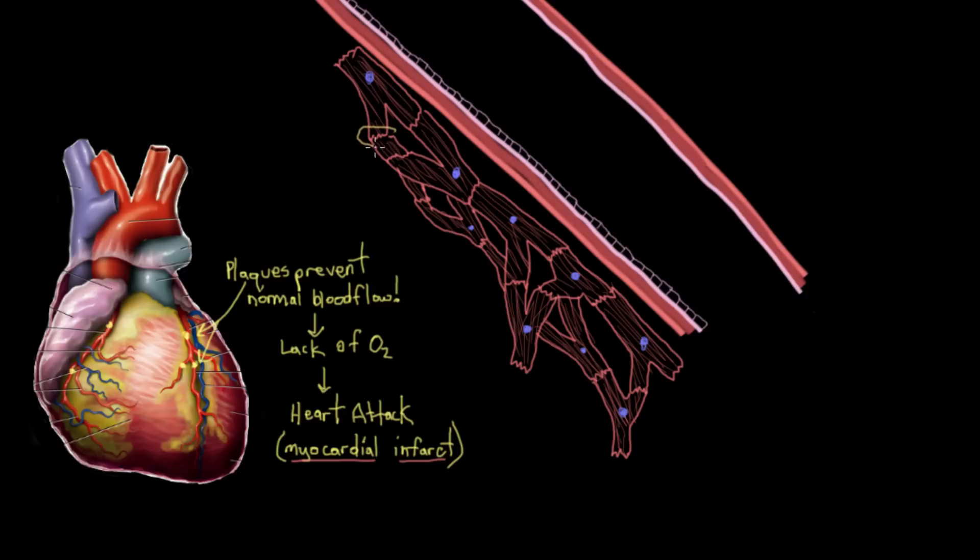There's some heart muscle cells. You might have noticed that I drew these cardiomyocytes in a really oddly connected way. The reason that cardiomyocytes, that heart muscle cells, are connected in this way is because by being connected like this, they can more efficiently work together to make sure that the heart pumps properly.